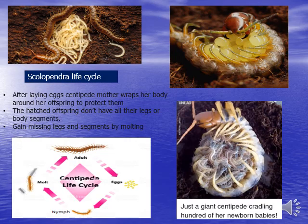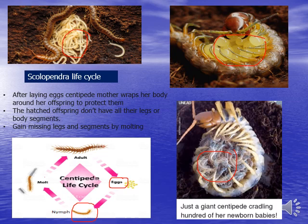In the life cycle of Scolopendra, after laying eggs, the centipede mother wraps her body around her offspring to protect them. The hatchlings do not have all their legs or body segments yet, and gain missing legs and segments by molting. The life cycle proceeds: eggs, nymph, molt, individuals molting, eat, grow, and eventually reach the adult form resembling the mother.